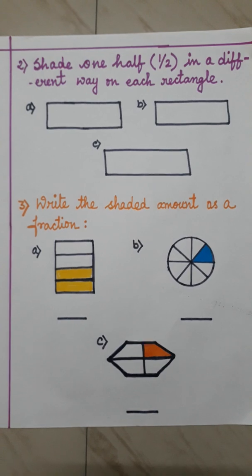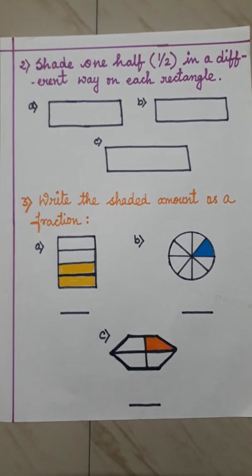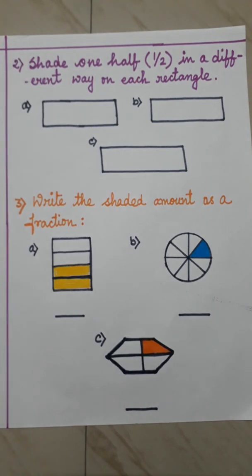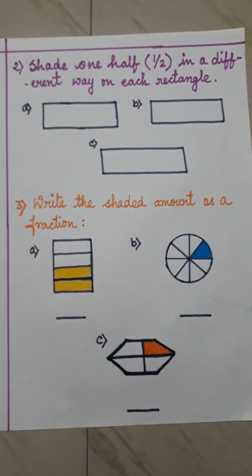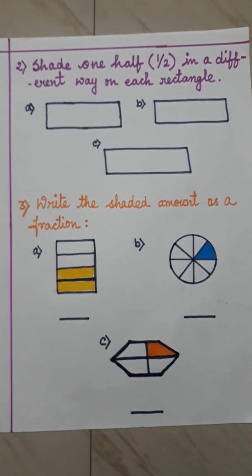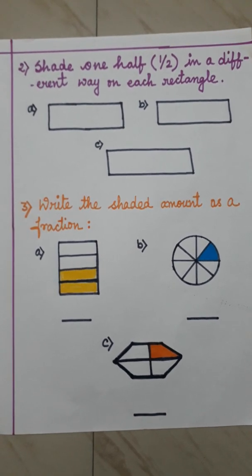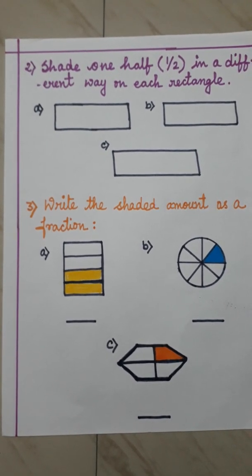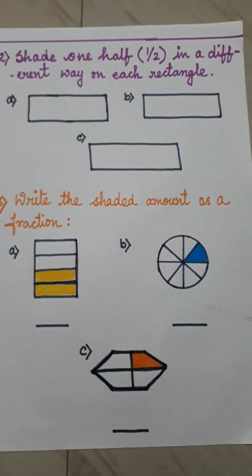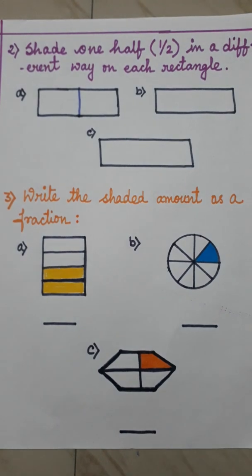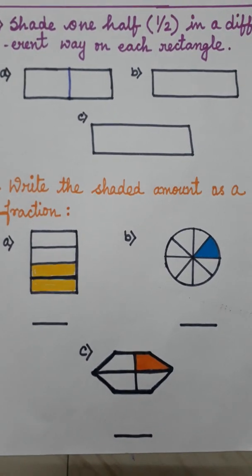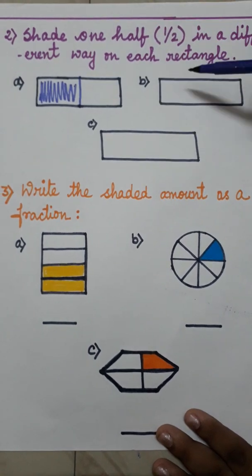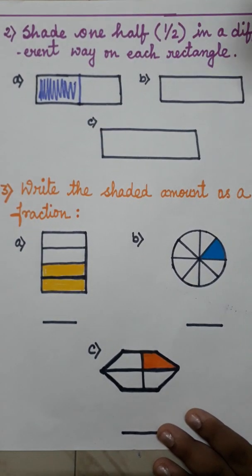In question number 2, it says shade 1 half in a different way on each rectangle. Three rectangles are given: 1, 2, and 3. You have to divide each rectangle into half, but each half should look different. You have to shade 1 part of the 2 parts. Think of 3 different ways to divide the rectangle. For example, you can draw a line in one way to make 2 parts, then shade 1 part.